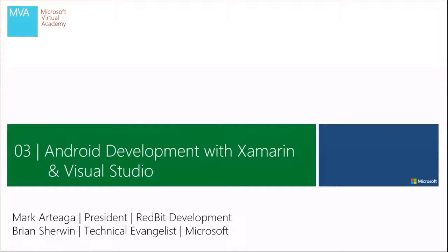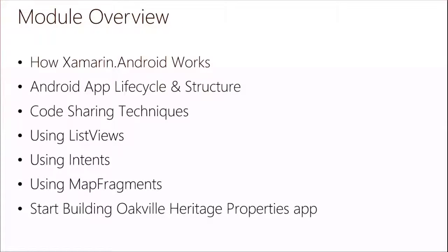Welcome back, everybody. So in the last module, we built out an iOS application for heritage properties to list them on a list view, on a map view, and show the details to navigate back and forth. In this one, we're going to do the exact same thing but on Android using Xamarin. We're going to get a Xamarin Android application working, go through how it works, the app lifecycle for Android, explore some code sharing techniques, then use ListView, intents, and map fragments to finish building out the Android application.